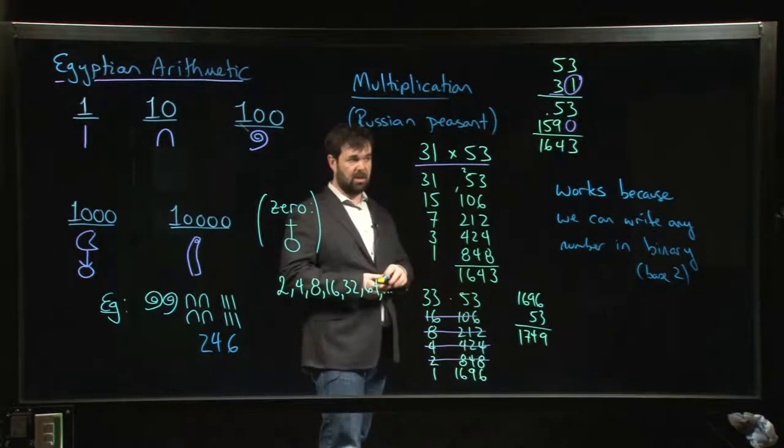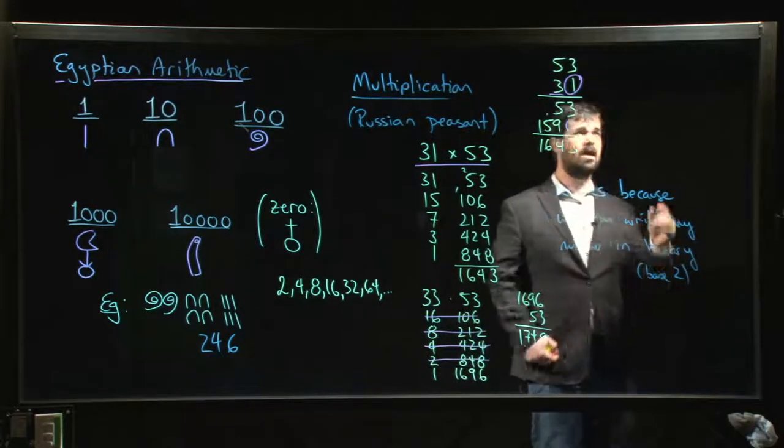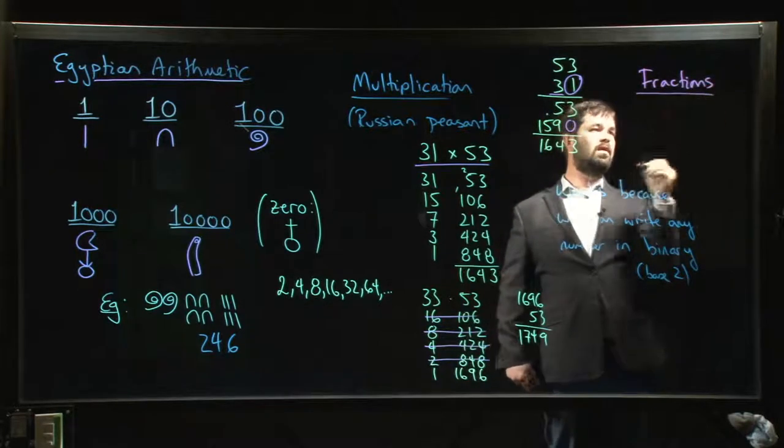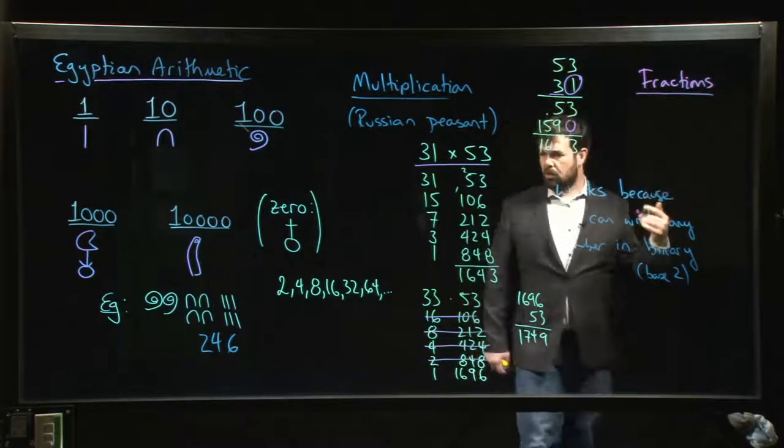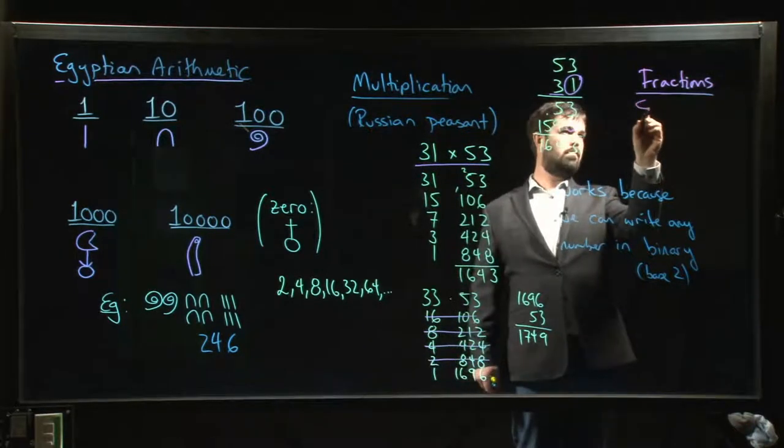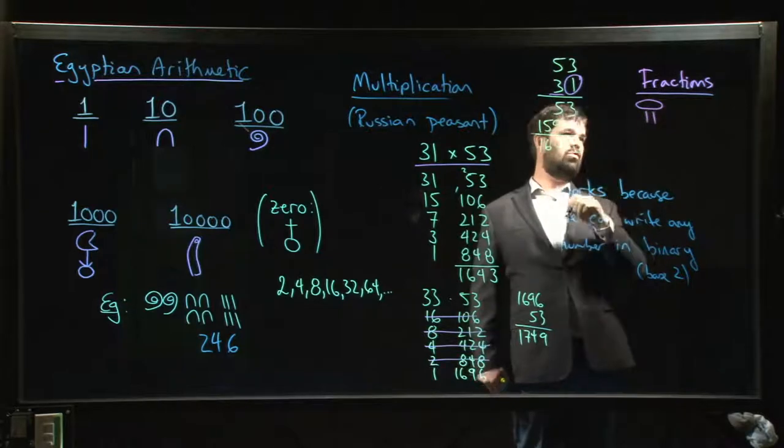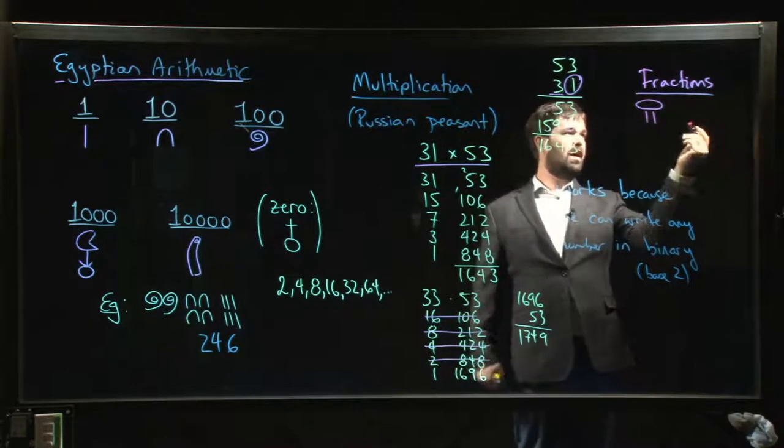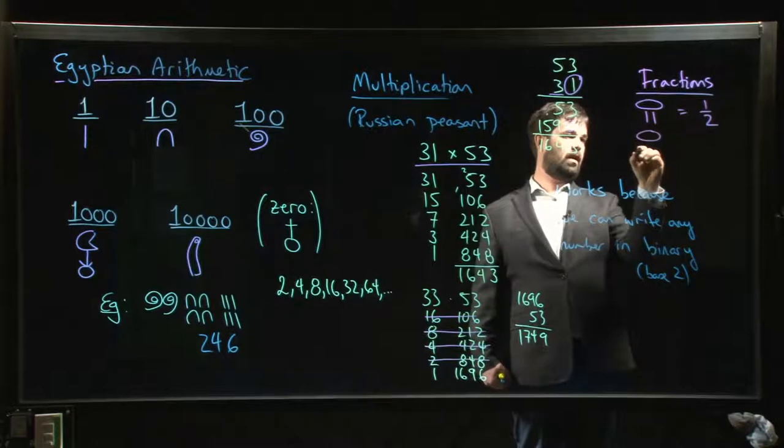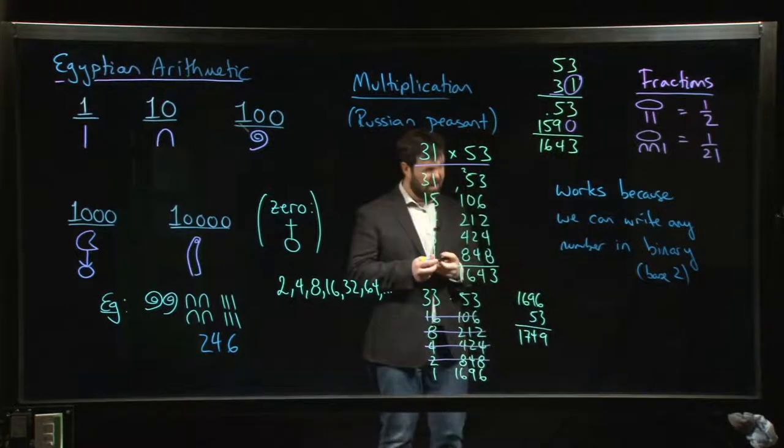The other thing we'll do if we have time is talk a little bit about Egyptian fractions. This video is already getting a little long, so let me just add a little note here, a little preview. Egyptians only knew how to do unit fractions. They knew how to do reciprocals and they had a symbol which was this sort of open mouth. This was their symbol for a part. You would write something like this, you just put the number underneath the mouth, and this would represent one over whatever that number was. So this would be the same thing as a half. Or if I did something like that, that would be one over 21.